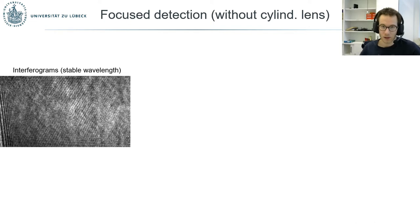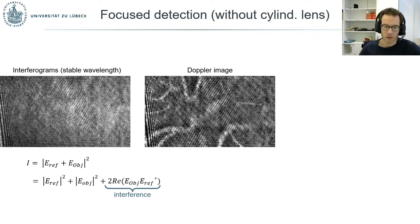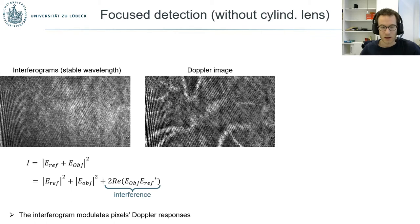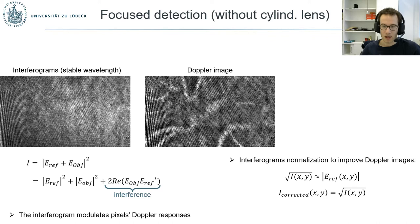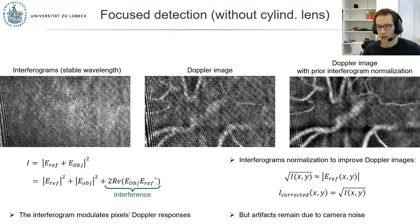To illustrate the benefits of defocused detection, here is what it looks like using a normal holographic OCT setup at a stable wavelength to perform Doppler imaging: the blood flow structures are hidden behind the interferogram pattern. Writing down the equations, in the interference cross terms the object field is modulated by the reference field, and almost all the light reaching the sensor is from the reference field, explaining why the interferogram modulates the Doppler response. It is possible to normalize the interferogram by taking the square root of the intensity, but that assumption is not exact in reality and artifacts remain.